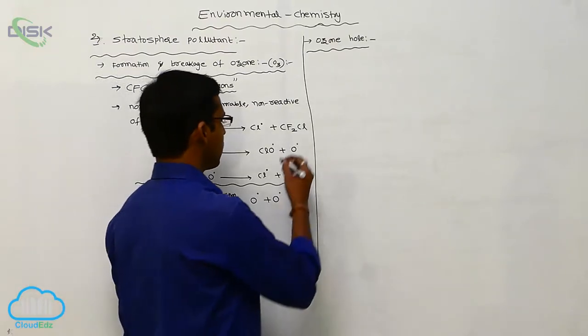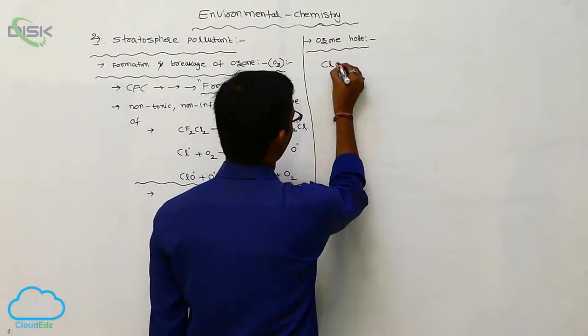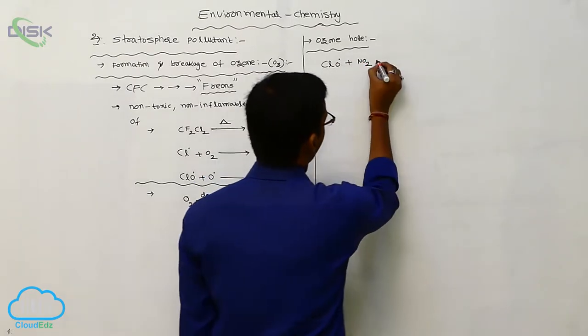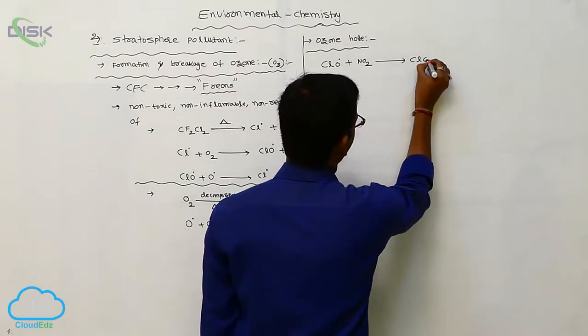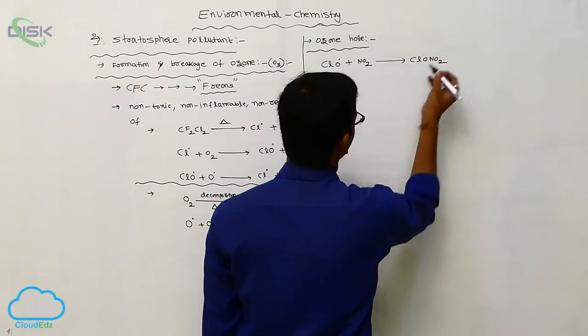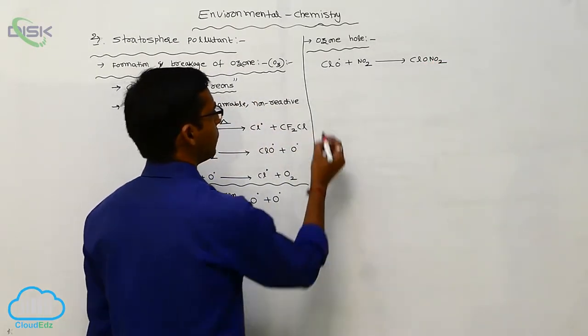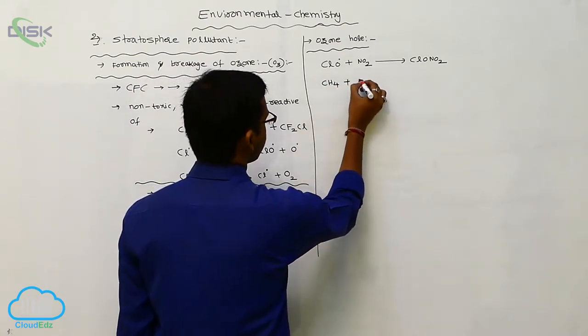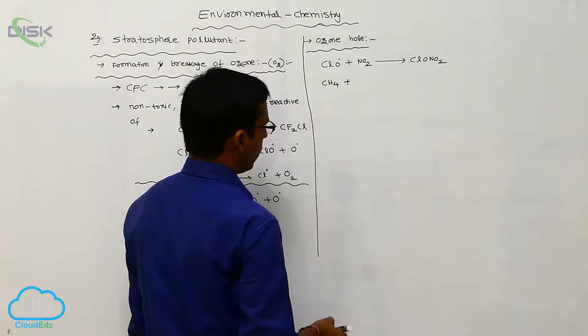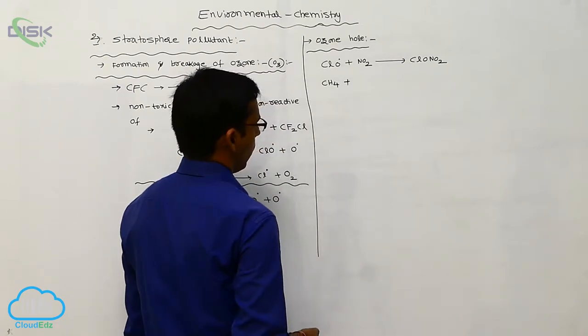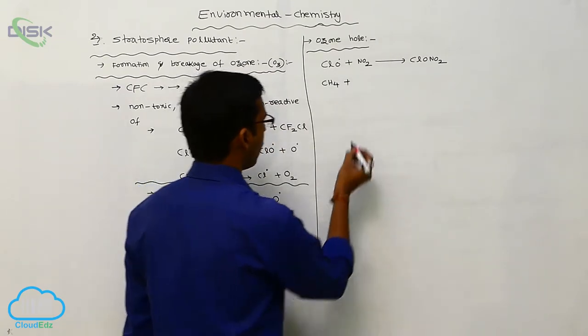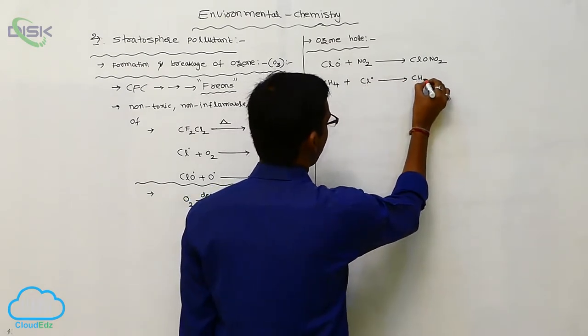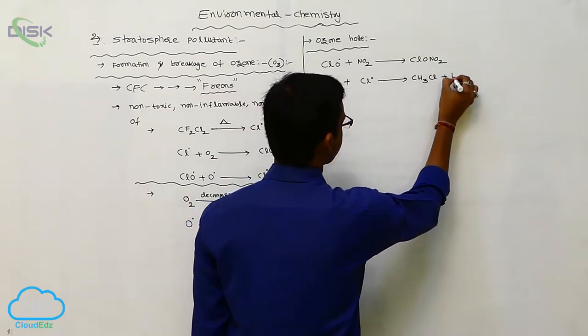Now see, this chlorine oxide ClO is reacted with nitrogen dioxide, forms ClONO2. Whenever the methane is reacted with ozone or chlorine radical, it is reacted with a chlorine radical, it gives methyl chloride plus HCl.